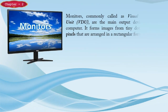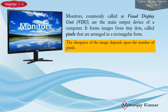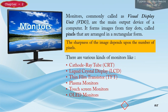Monitors, commonly called Visible Display Units (VDU), are the main output devices of a computer. They form images from tiny dots called pixels arranged in a rectangular form. The sharpness of the image depends upon the number of pixels. There are various kinds of monitors: CRT monitors (Cathode Ray Tube), LCD monitors (Liquid Crystal Display), TFT monitors (Thin Film Transistor), plasma monitors, touch screen monitors, and OLED monitors (Organic Light Emitting Diode).